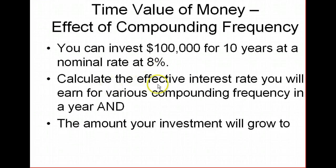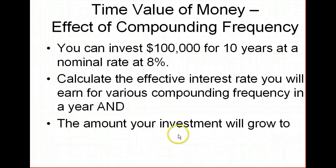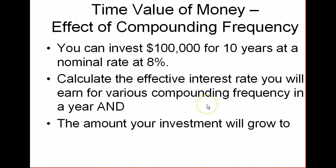Now, first, calculate the effective interest rate you earn for various compounding frequencies in a year. And in the previous example, we showed you how to do that using a data table. Now, second, calculate the amount your investment will grow to in 10 years for $100,000 at 8% and at varying compounding frequencies.